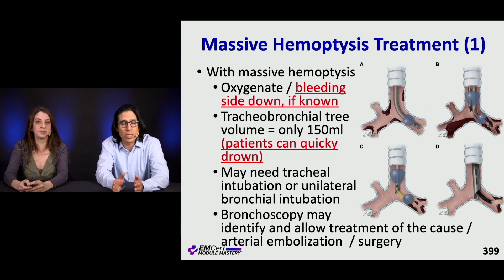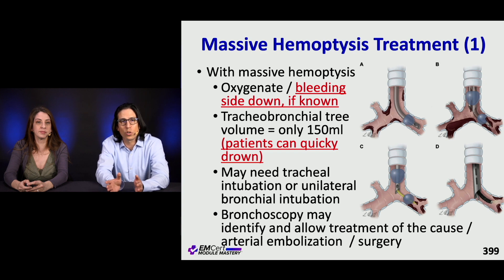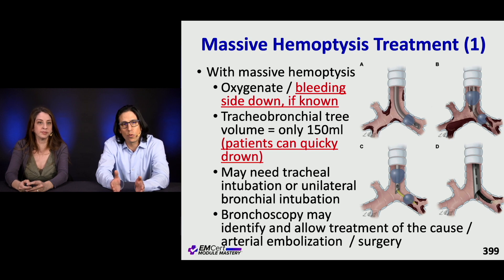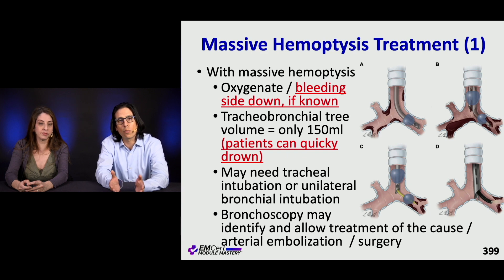To oxygenate these patients, you want to put the bleeding side down if you know where it's coming from. Remember the tracheobronchial tree only holds about 150 ml, so a patient can very quickly drown in their own hemoptysis. They often need intubation — sometimes you have to selectively intubate one bronchus to allow aerated lung. Bronchoscopy is helpful as it's both diagnostic and can permit treatment by placing a bronchial blocker to temporize bleeding and allow time for IR treatment or surgery.